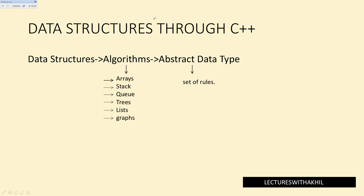Coming to data structures through C++. For doing data structure, a set of algorithms were proposed like arrays, stack, queue, trees, lists, and graphs. All these algorithms are called abstract data types. Abstract data type is nothing but a set of rules.